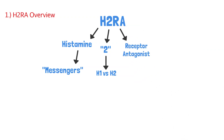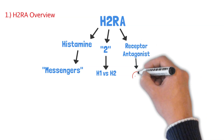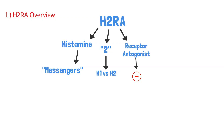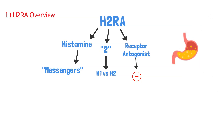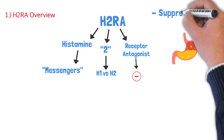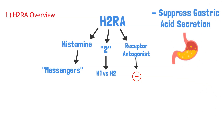RA stands for receptor antagonist, and antagonist basically means to block. So when we put these words together, histamine 2 receptor antagonist literally means blocking the histamine 2 receptors. You'll find these receptors in the stomach lining because they promote gastric acid. Since these are receptor antagonists, we block the H2 receptors — and that suppresses gastric acid.